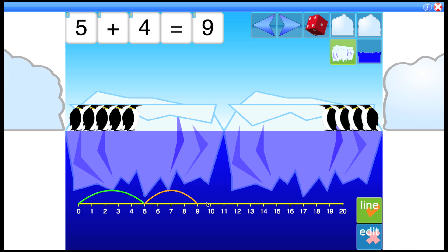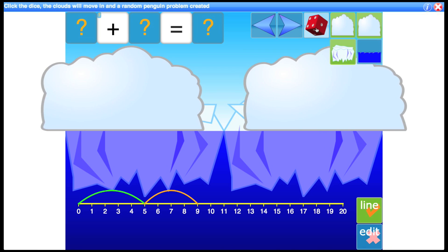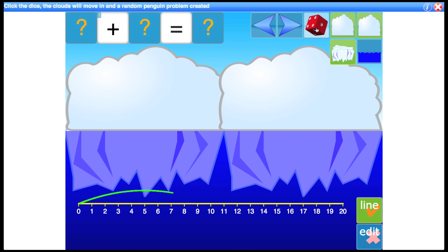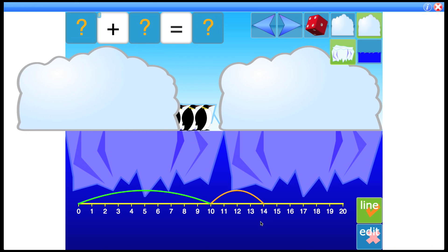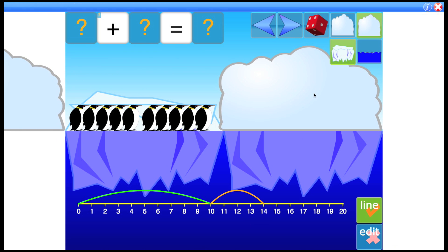Which gets us back to how do you actually change the number of penguins on the screen. We've seen you can create a random problem like so, and this will be represented on the number line as well. So you can then talk about what does that mean, what's actually on these icebergs. So hopefully the students would realize that there's 10 on the first one and there's 1, 2, 3, 4 on the second, which gives you 14.